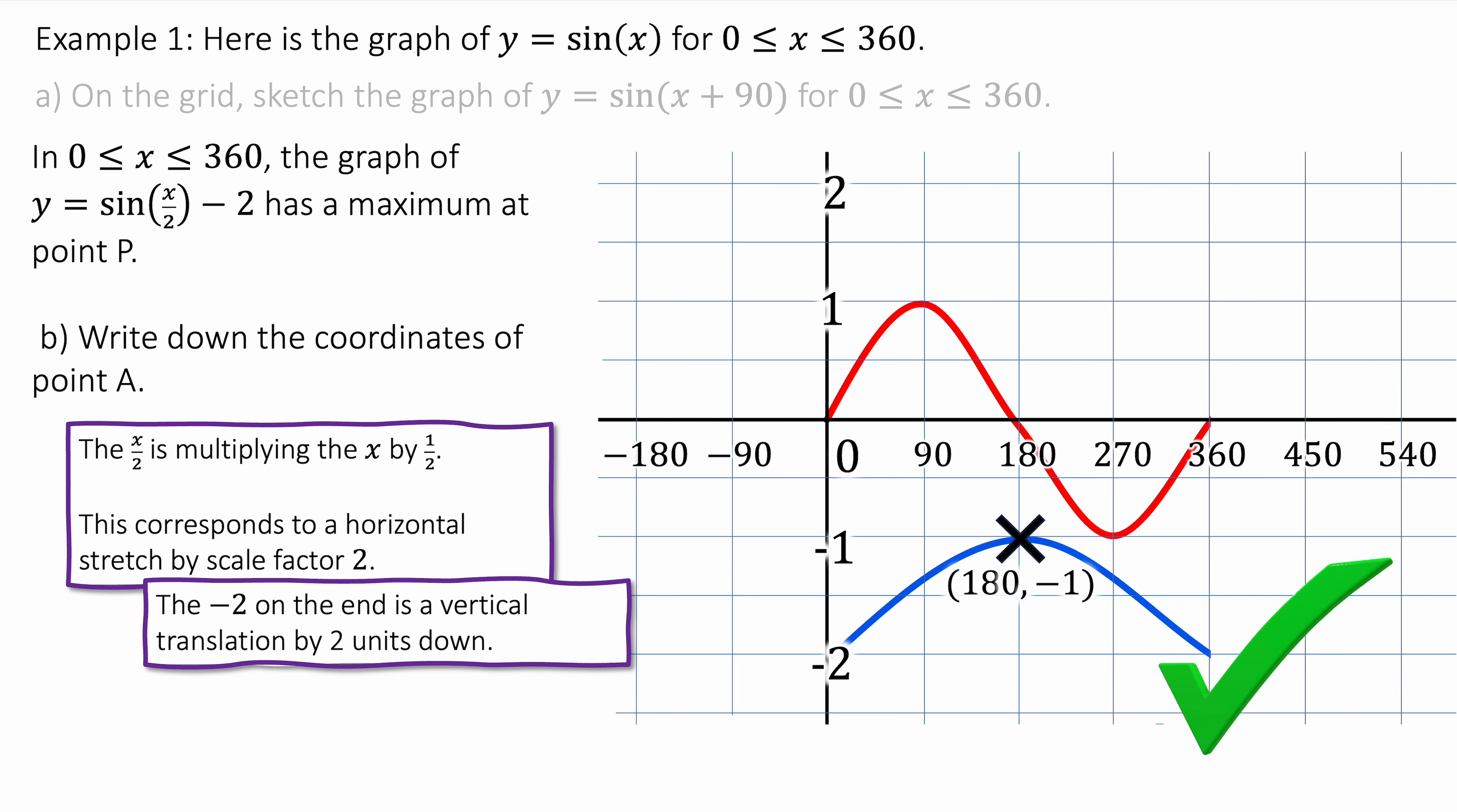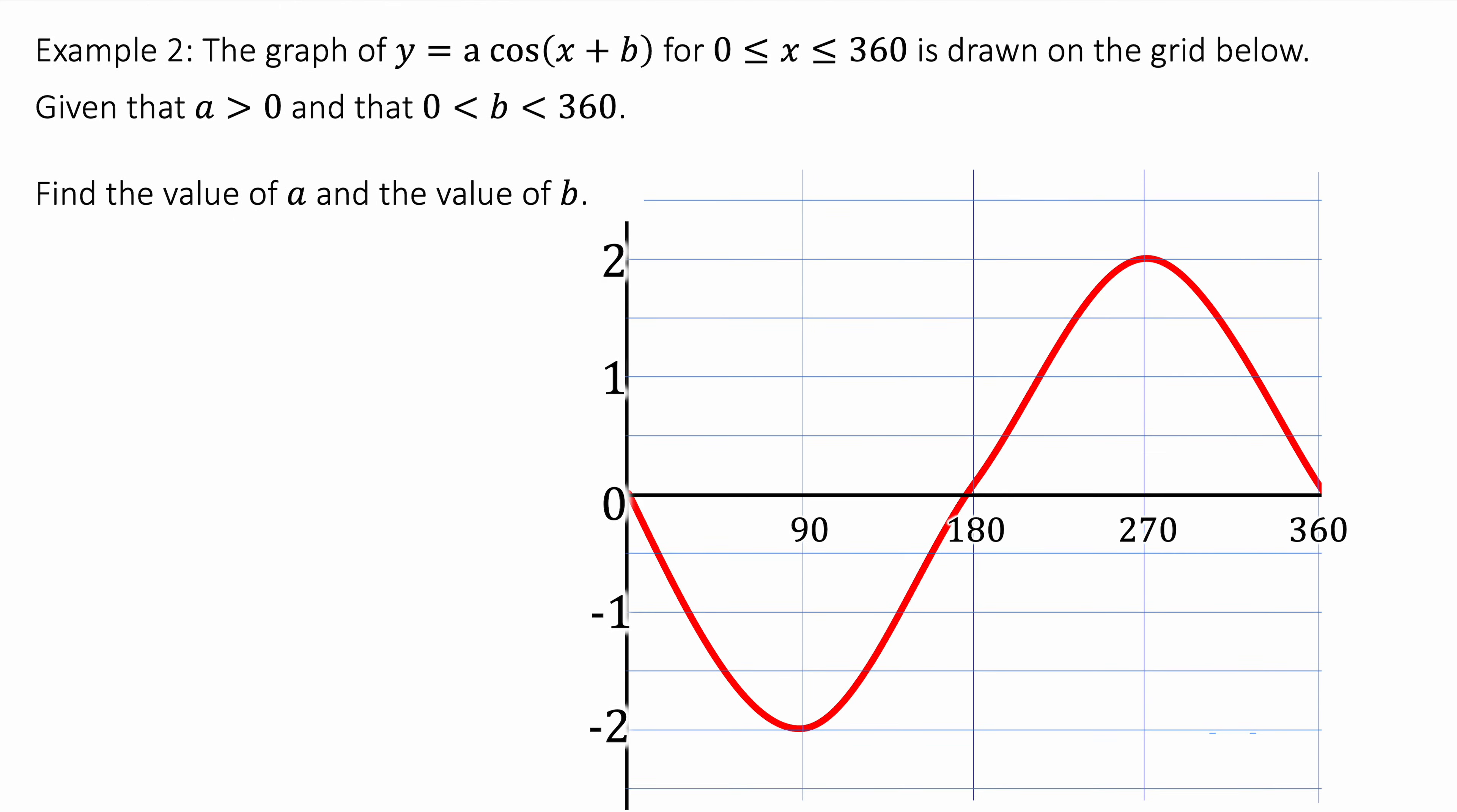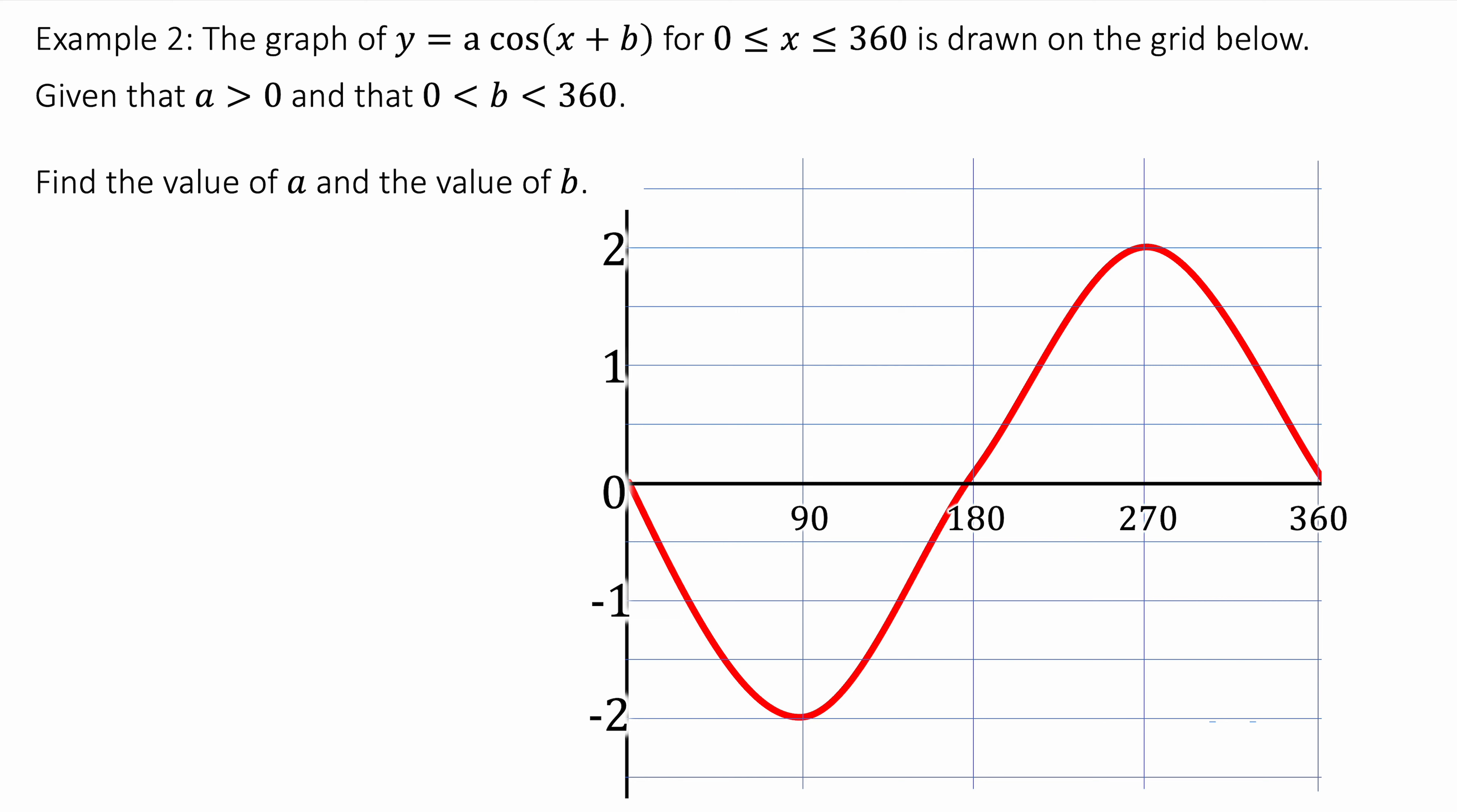That's example 1. Let's move on to example 2. The graph of y equals a cos of x plus b between 0 and 360 is drawn on the grid below. Given that a is more than 0 and 0 is less than b is less than 360. Find the value of a and the value of b.